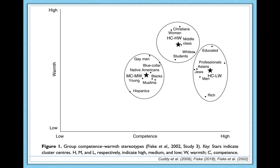Next, we have a group I haven't discussed yet: MCMW. Based on where that cluster sits on the graph, the M stands for moderate — moderate competence and moderate warmth, right in the middle of both axes. Examples include blue-collar workers, Native Americans, Hispanics, and young people.